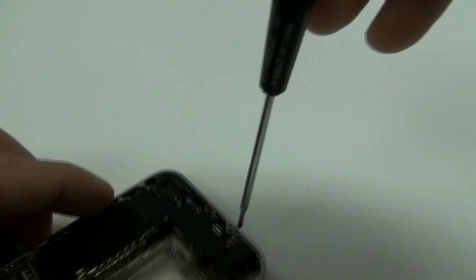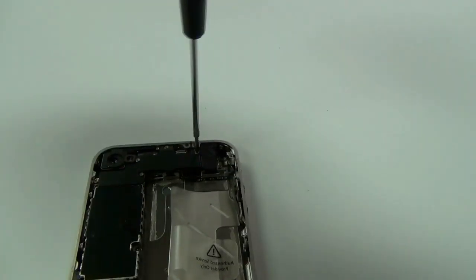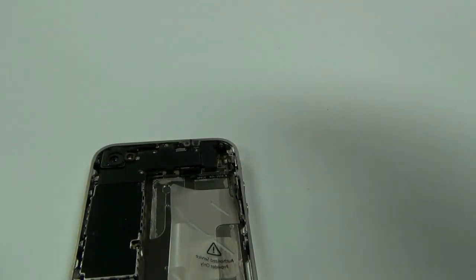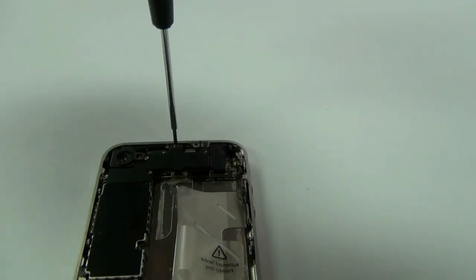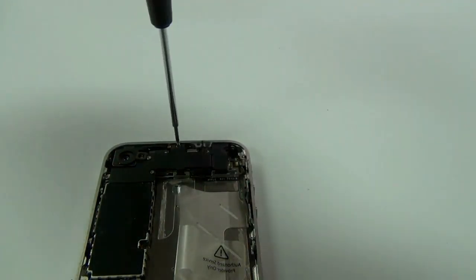Next, you will want to take off the five size 00 screws covering a metal bracket on the top of your phone. All of these screws are different sizes, so once again, put them in the same order you took them out so that you do not have a hard time putting them back in.